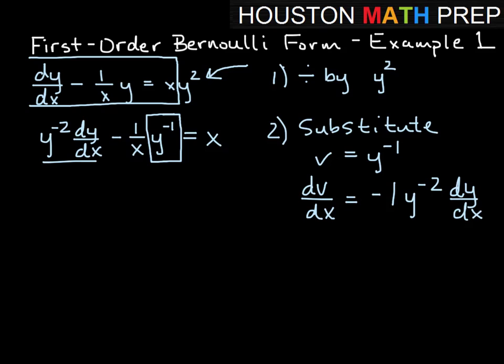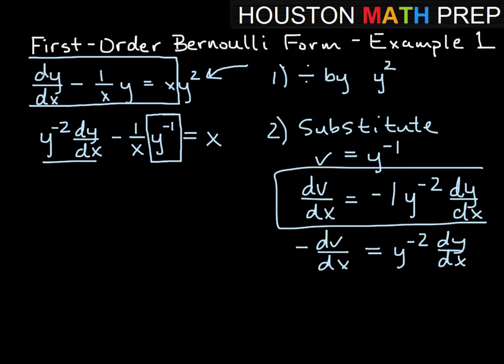So we're very close to this, we're just off by a sign. So in other words, negative dv dx is equal to positive y to the minus 2 dy dx. So we just took this equation here, and we multiplied it by negative 1 on both sides.